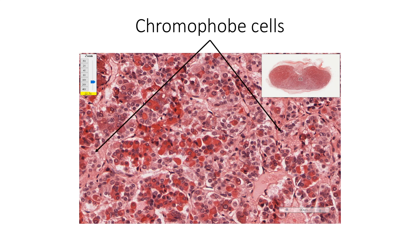Chromophobe cells form about 50% of the cells in the pars distalis. They have low affinity for stains and therefore appear pale in color. They do not have any secretory granules and are considered to be resting cells, degranulated cells, or precursor stem cells for the chromophil cells. In addition to chromophobes and chromophils, pars distalis also shows folliculostellate cells. The secretion from chromophil cells is regulated by the hypothalamus either via the portal system or through these folliculostellate cells.